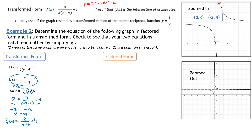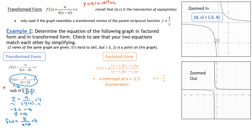Now looking at factored form. We've got factors in the numerator and the denominator. The numerator comes from the x-intercept. We have an x-intercept at −2.5. We can't have decimals in these factors, so we write it as negative 5 over 2. Multiplying both sides by 2 gives 2x equals −5. Bringing the 5 over, there's my factor for the numerator: 2x + 5.